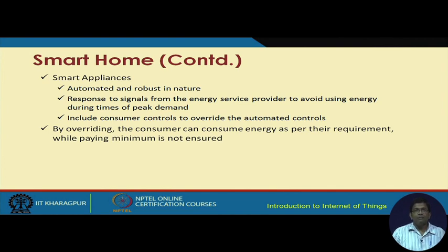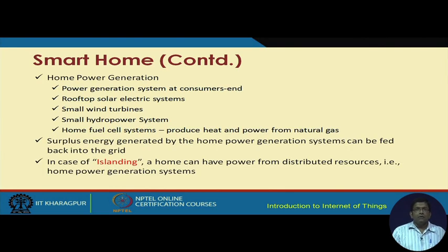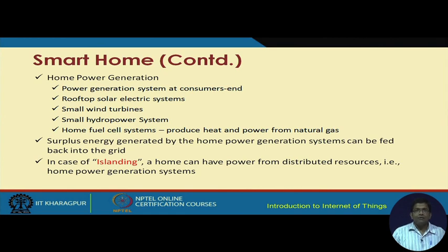Smart appliances can be automated and robust in nature — they respond to signals from the energy service provider to avoid using energy during peak times. Smart appliances also include consumer controls to override the automated controls. Every home can also be equipped with home power generation systems — wind turbines or solar panels can be fitted on the rooftop to supplement the regular flow of energy. Surplus energy generated by home power management systems can be fed back into the grid, and consumers can in fact earn some additional money through this process. In case of islanding, a home can have power from distributed sources.